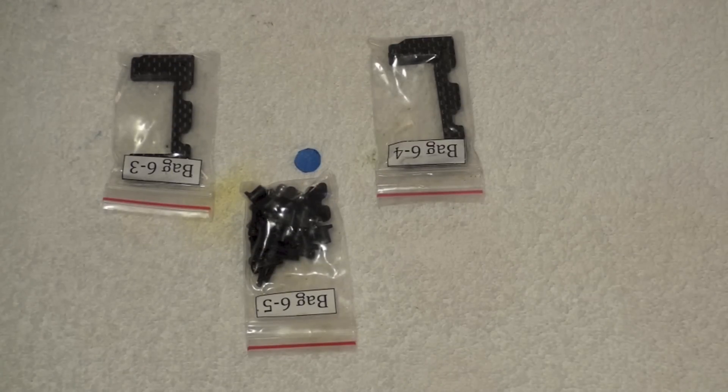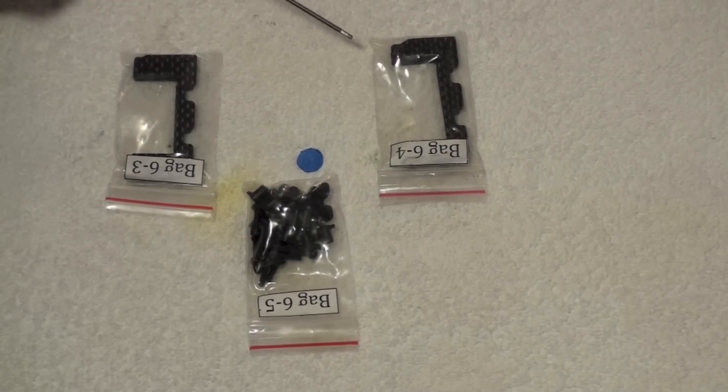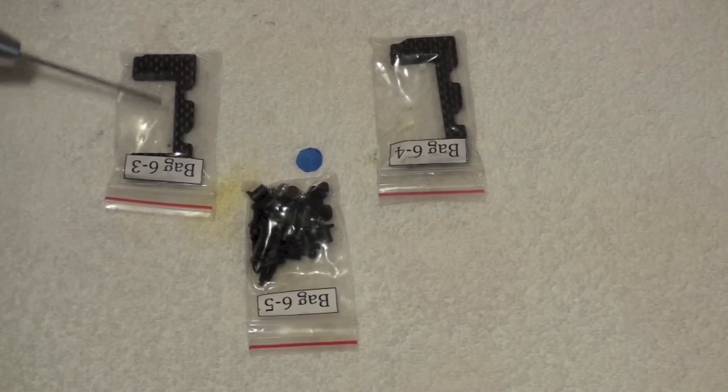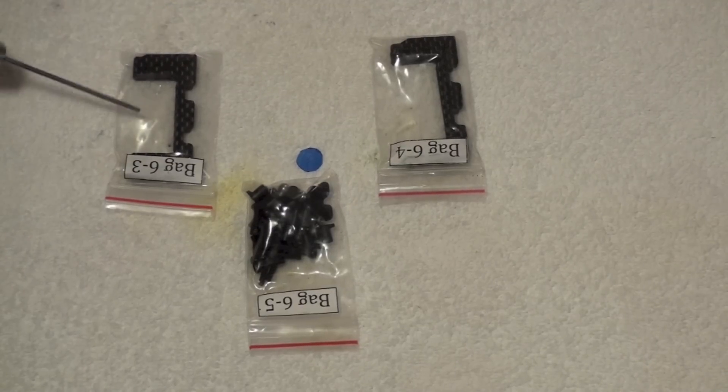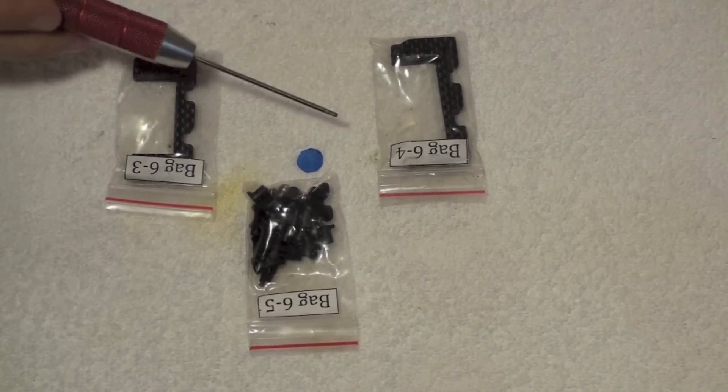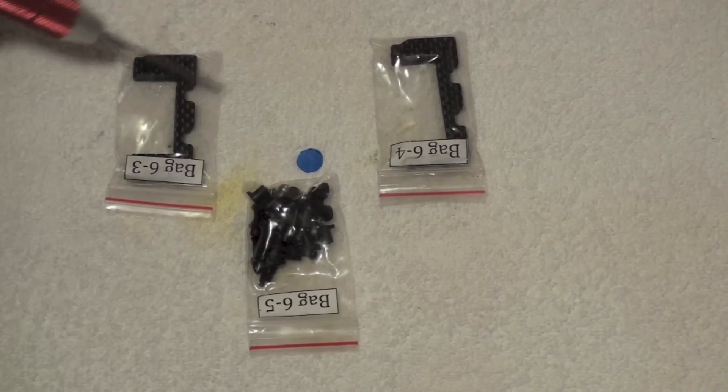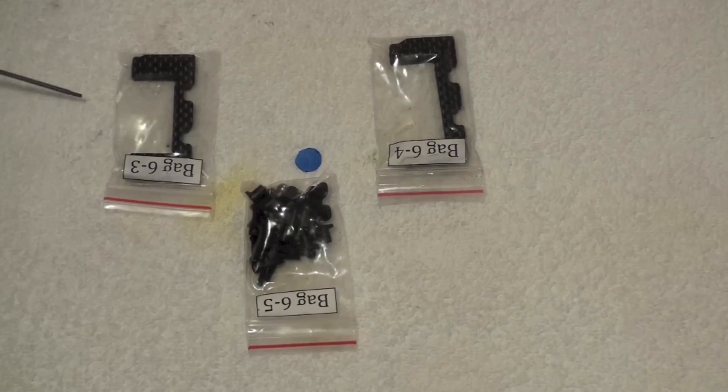So in Chapter 8, servo mounting, we're going to start off with bags 6.3, 6.4, and 6.5. 6.3 and 6.4 are servo mounting plates. There are supposed to be two different sizes. It has come up on Helifreak that there have been a couple of guys that have had all of the same size or three of one and one of the other. There's been a little bit of bagging issue with some of these.